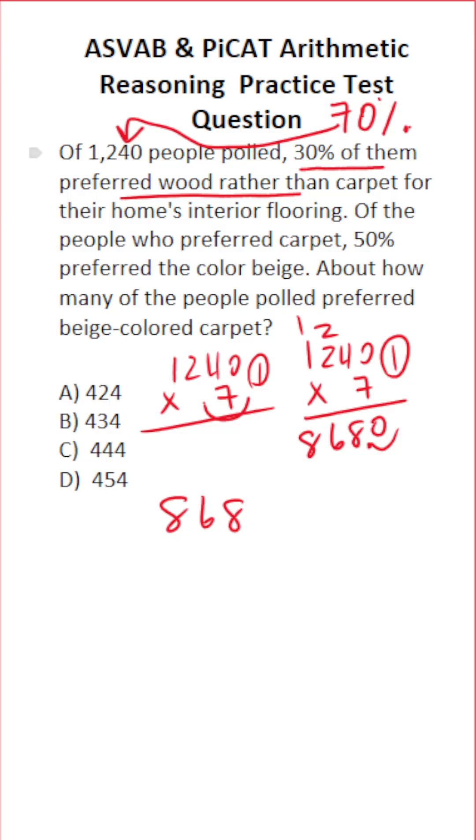And right here we're told that 50% of those people preferred the color beige. So we're going to take 868, we're going to multiply it by 0.5, which is the decimal equivalent of 50%. Again,